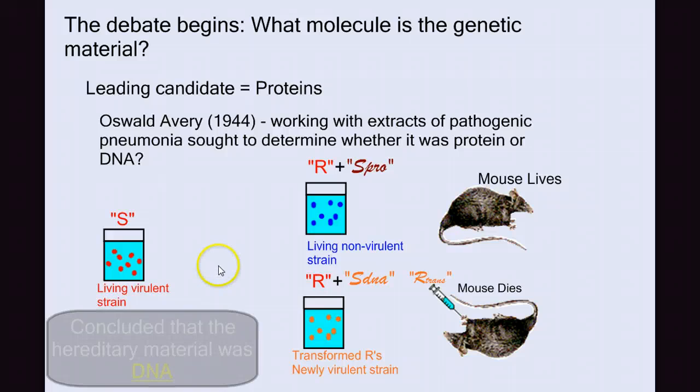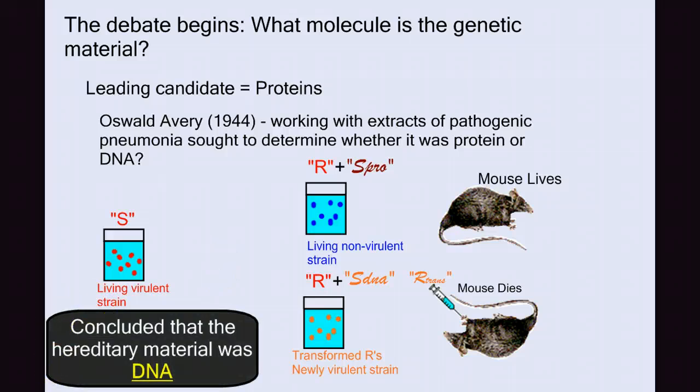Avery and his colleagues concluded that the hereditary material was DNA. The protein extracts from the S-bacteria did not transform the R-bacteria, but the DNA extracts did.